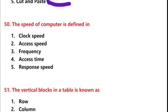Next question: the speed of a computer is defined in — options: clock speed, access speed, frequency, access time, response speed. Answer is option 1: clock speed.